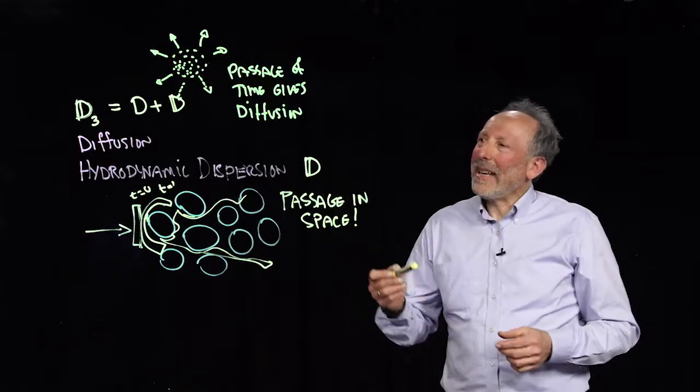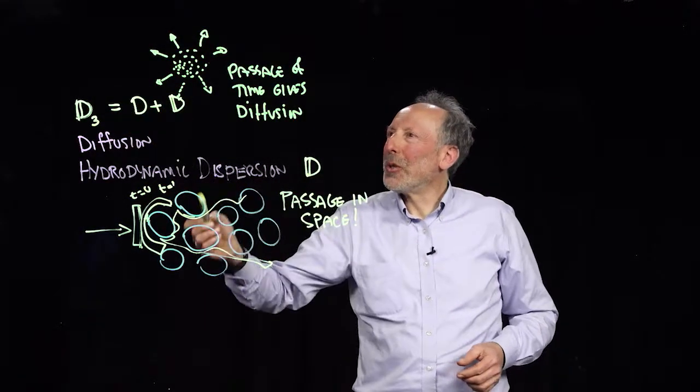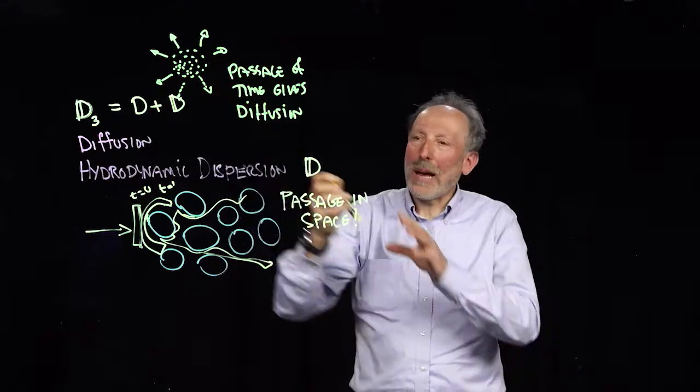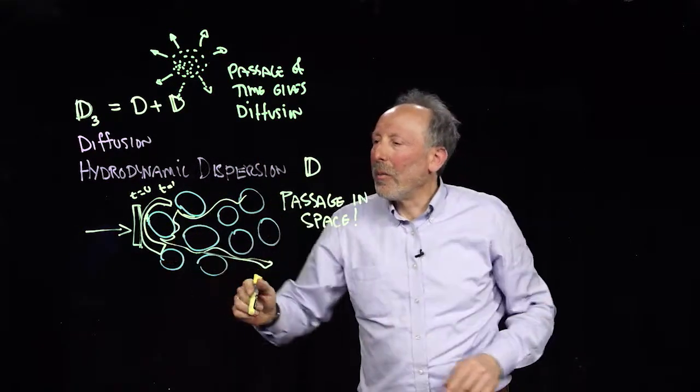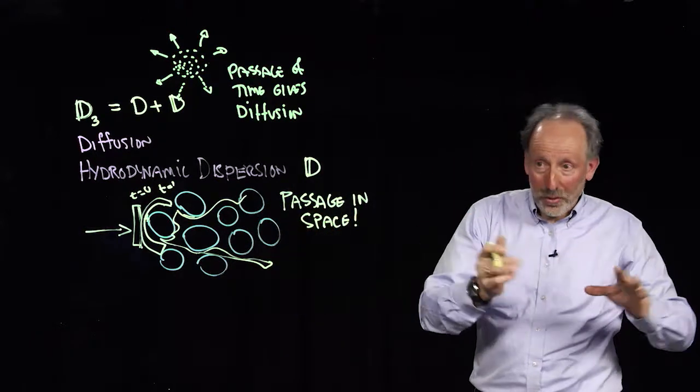We've seen that dispersion has two terms: diffusion, which happens inexorably in time and spreads things out, and dispersion, which spreads things out when solutes are moving.